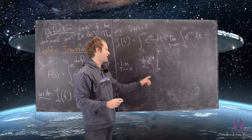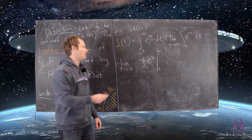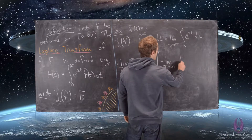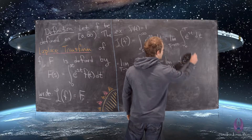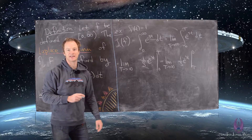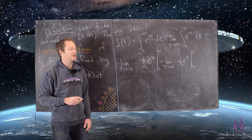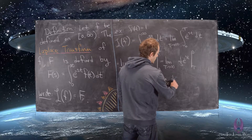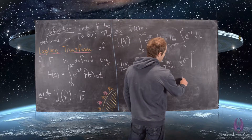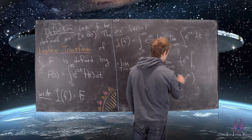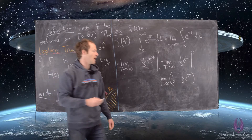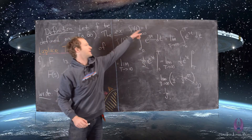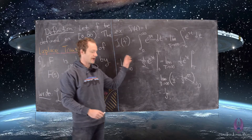Using a sign-flipping trick to change the bounds, that gives us the limit as capital T goes to infinity of one over s times e to the minus st evaluated from t to zero, which equals the limit of one over s minus one over s times e to the minus sT. That exponential term goes to zero, so we get one over s. The Laplace transform of the constant function one is one over s.